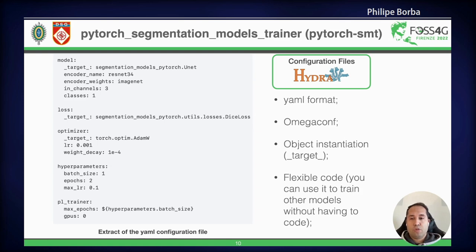PyTorch Segmentation Models Trainer auto-instantiates this model and uses it to train the models already implemented in the framework. By using this approach, we can have flexible code. You can use it to train your own models — you can even implement your own models and they will not be a dependency of PyTorch Segmentation Models Trainer.